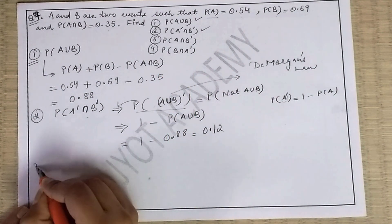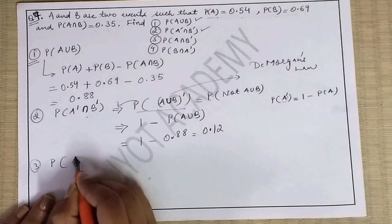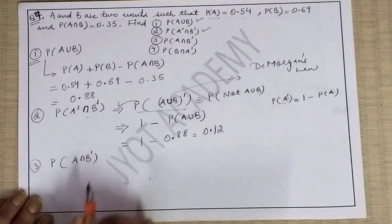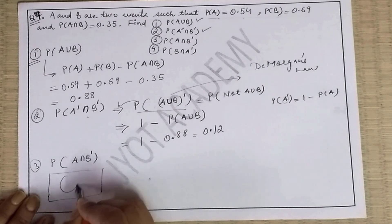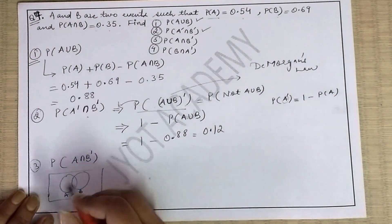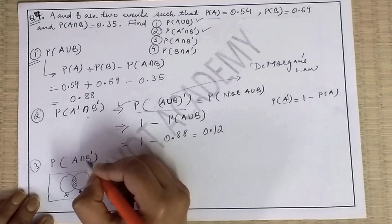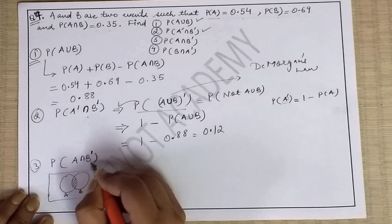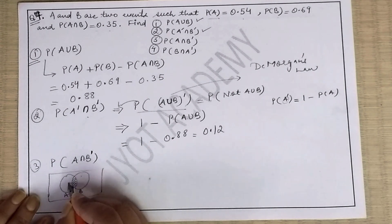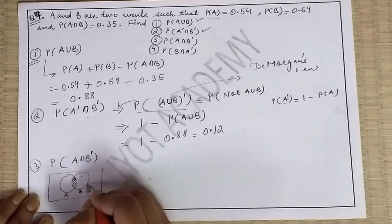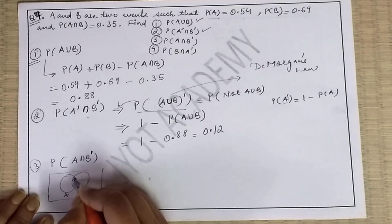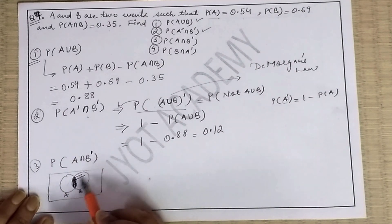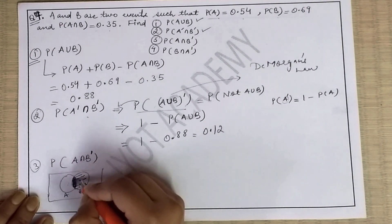The third part asks for the probability of A intersection B-not. Let's understand this with a Venn diagram. We have set A and set B. A intersection B covers the common part. But A intersection B-not means we want A but no part of B at all - so we must remove even the intersection portion where B appears. That means we subtract the A∩B common portion from A entirely, leaving only the dotted area of A outside B.